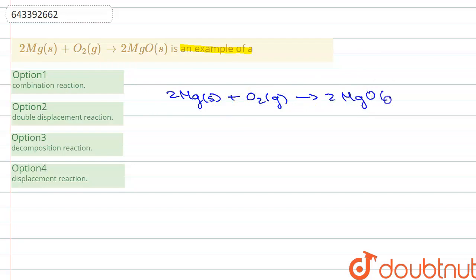We have two moles of magnesium oxide which is in solid state and they are asking us which type of reaction it is. So let's see one by one.